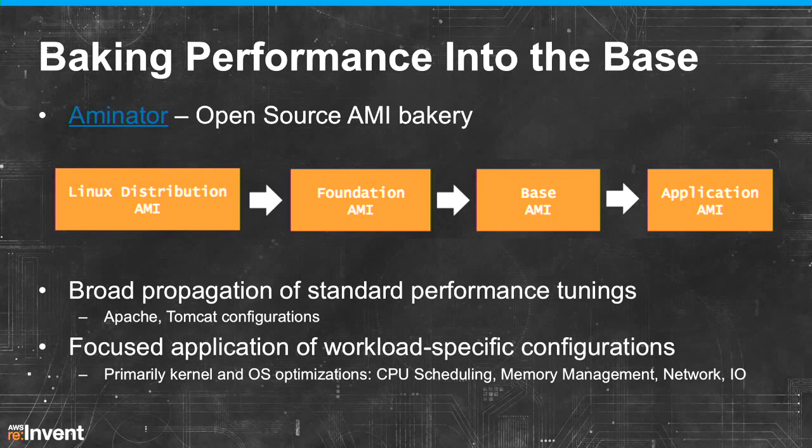With thousands of instances, if we had to individually configure them to gain performance benefits, it would be a real pain. So we have an open source project called Aminator — it's our bakery pipeline, available on the Netflix GitHub site. It allows us to create a pipeline for prepping application AMIs. Basically you take a distribution AMI, pull it into your account, create what's called a foundation AMI by taking snapshots off that EBS root volume, and then on top of that we have what we call a base AMI, which is maintained by our engineering tools team.